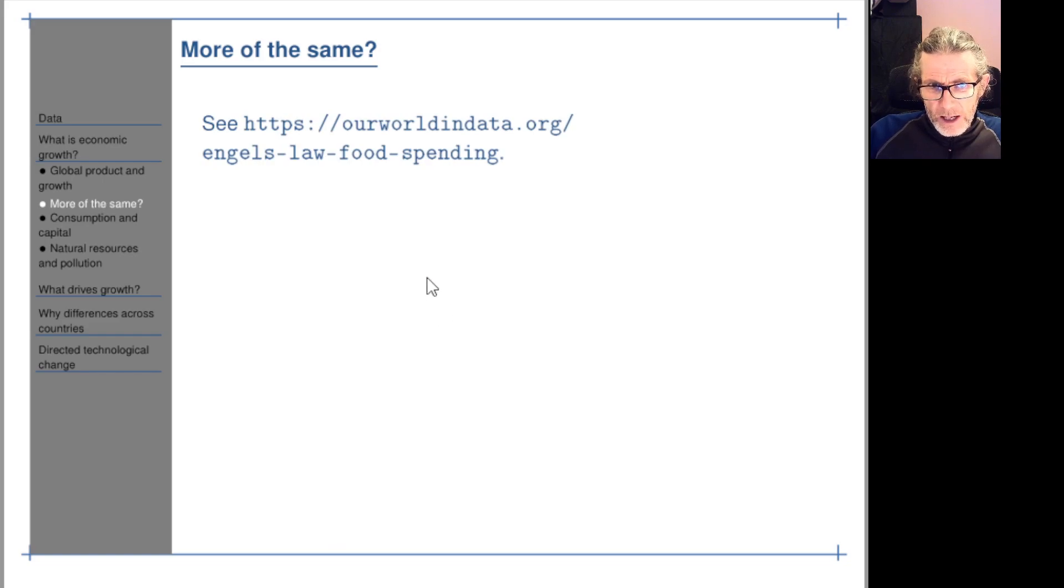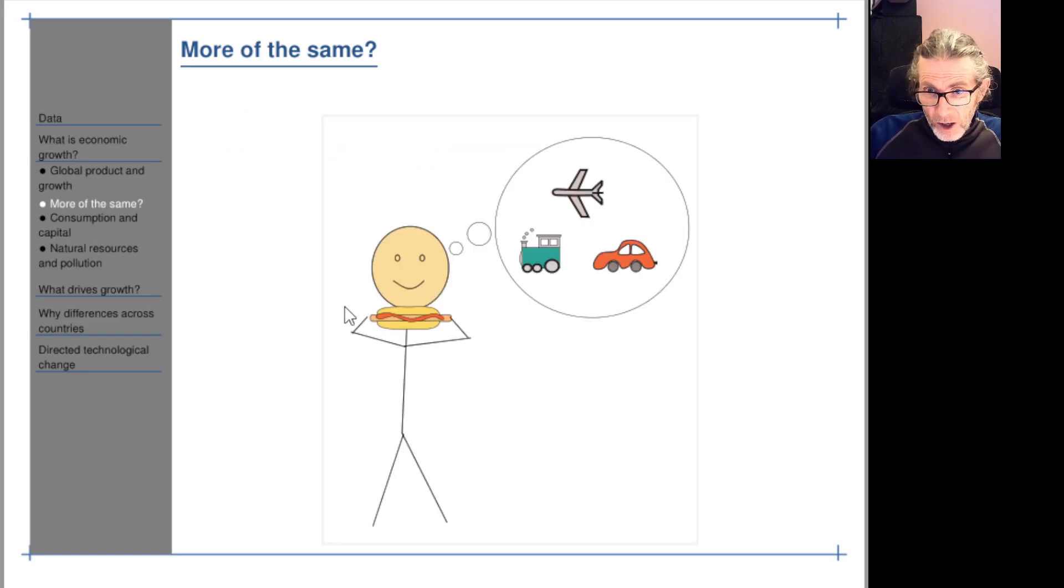And generally early on when we're very poor or when we have very low incomes we spend most of our income on things like food and shelter. As we get richer we start spending our income on all sorts of other things.